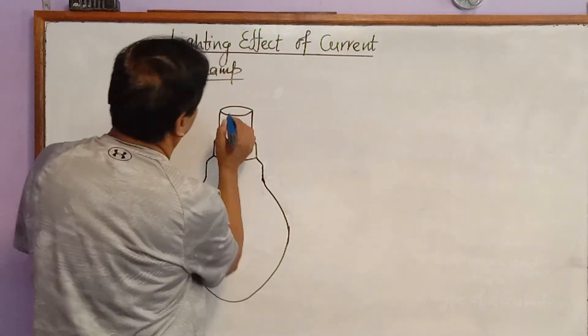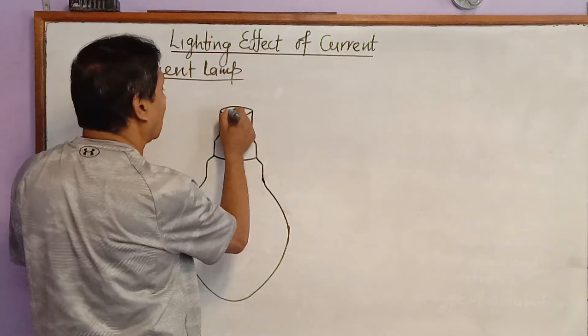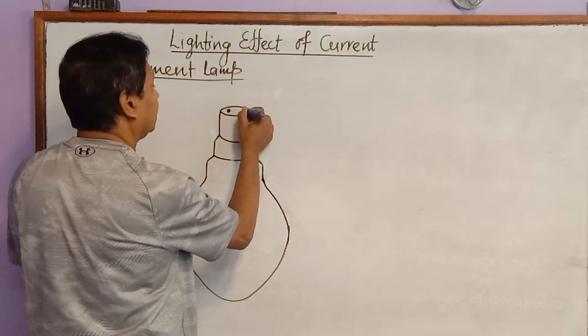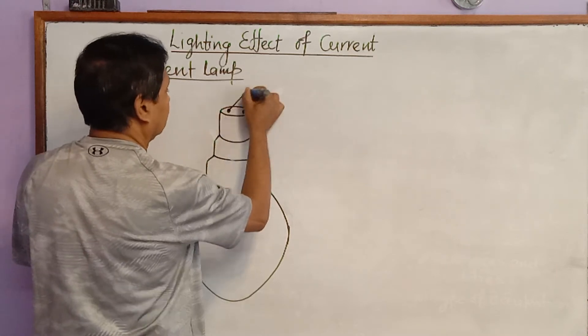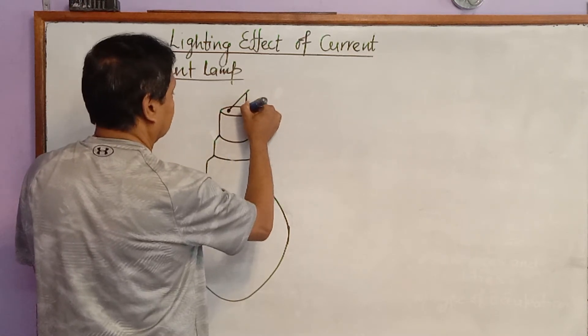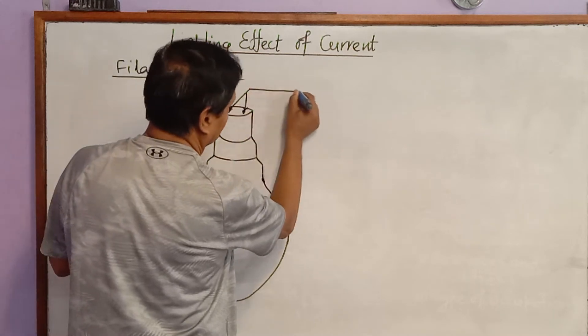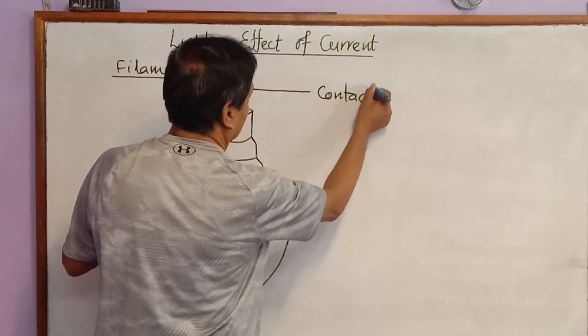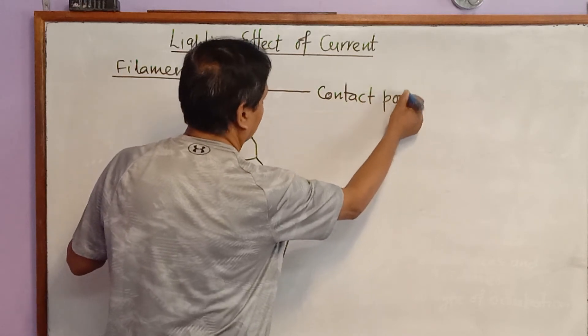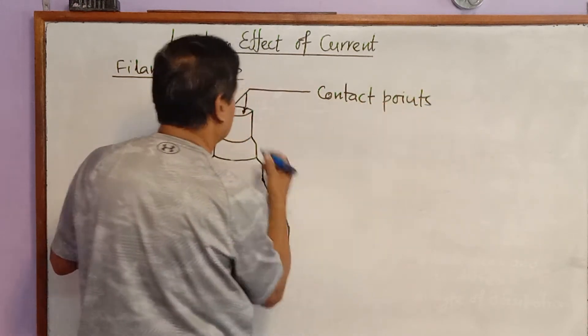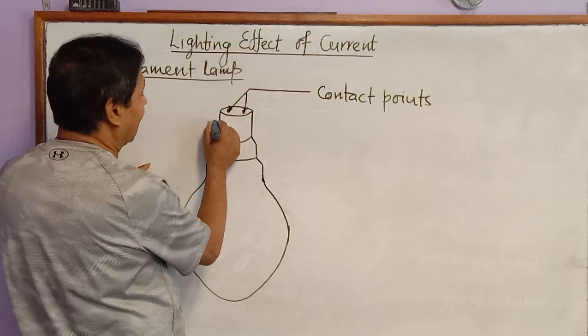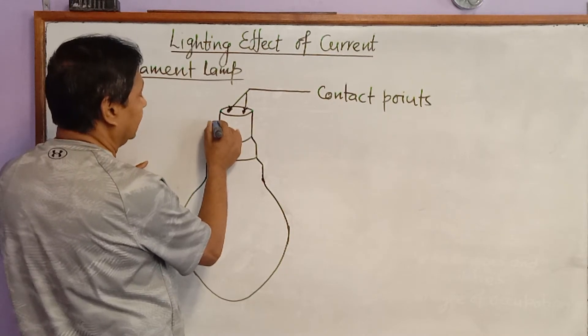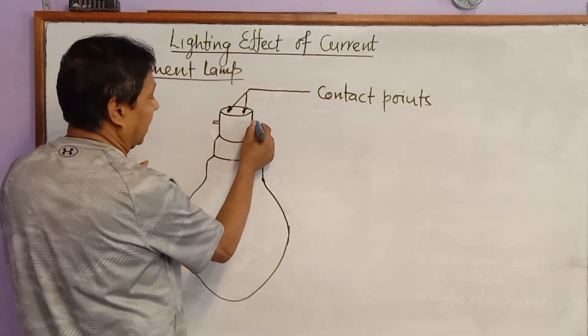Here we have two contact points. This comes in contact with the live wire and neutral wire. And here we have holder pin.